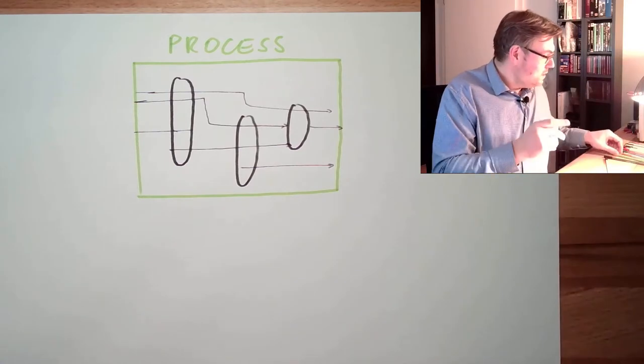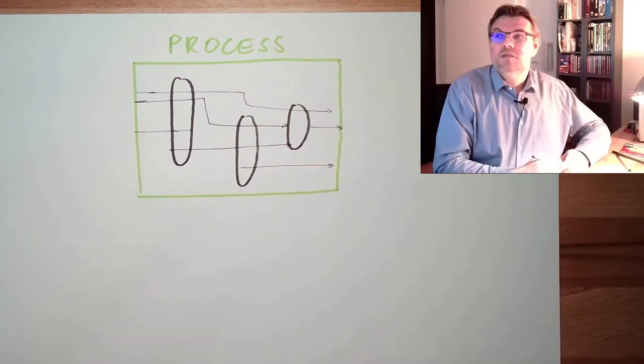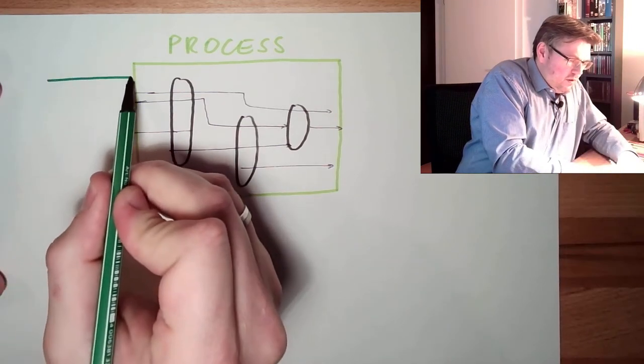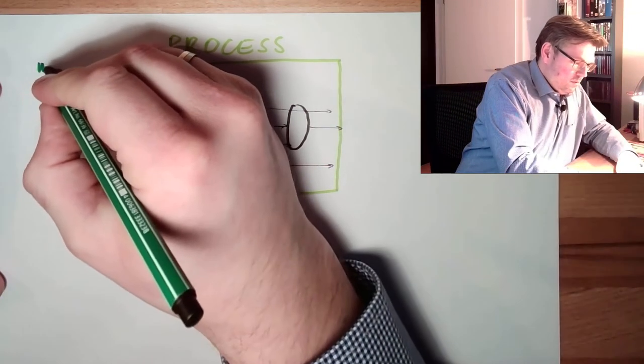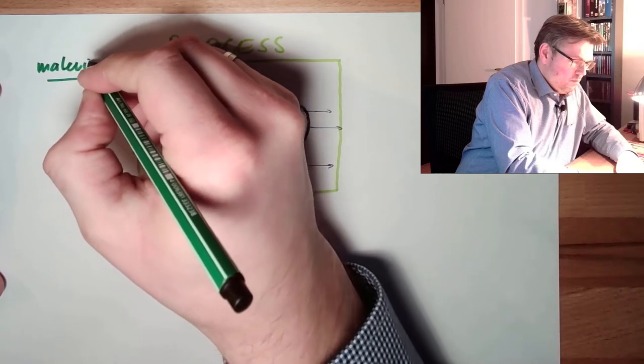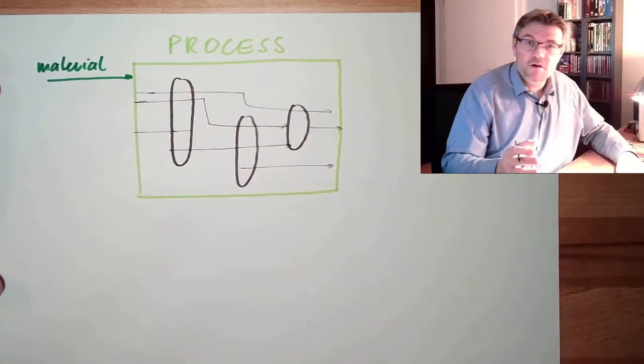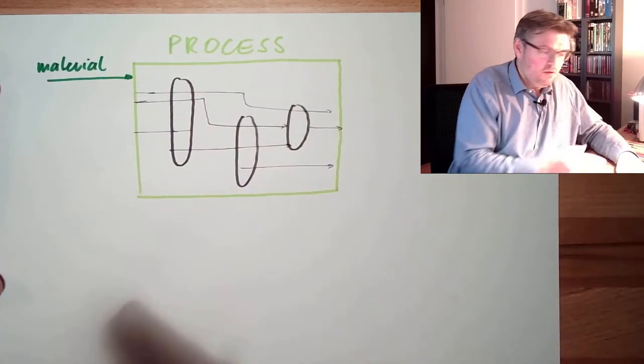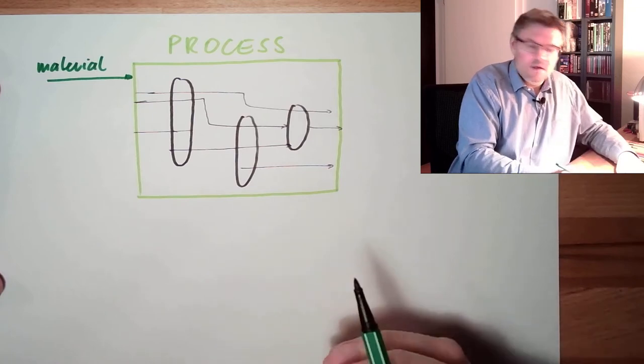The things which go into the process, these are material, raw materials, something like this. Things I need for my process. And then there's energy.